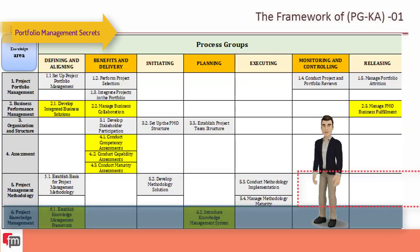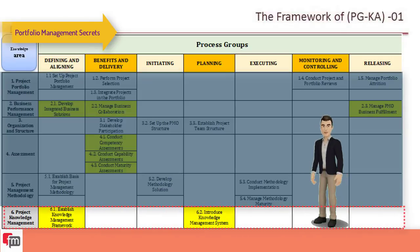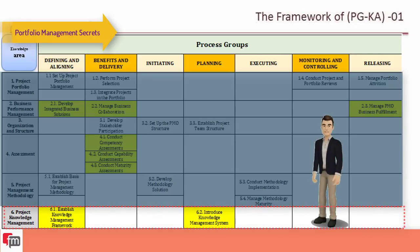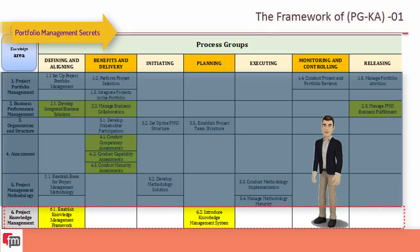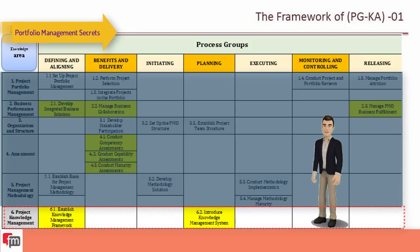The sixth knowledge area is project knowledge management. Knowledge management — what it is, what it does, and who should use it — will be disseminated as coordinating organizational knowledge and information. There are three processes: establish knowledge management framework, introduce knowledge management system, and implement knowledge management system.